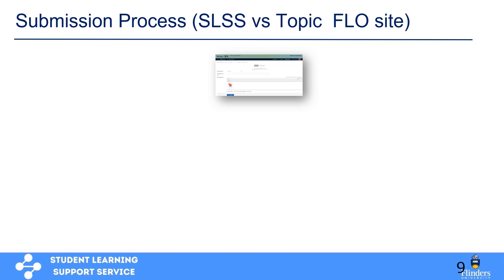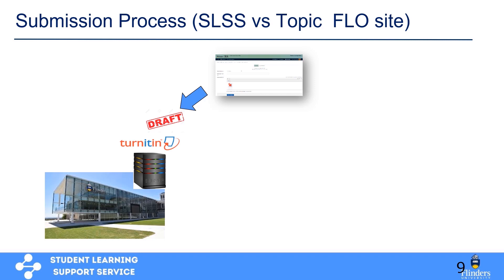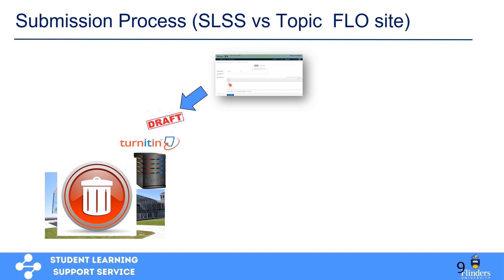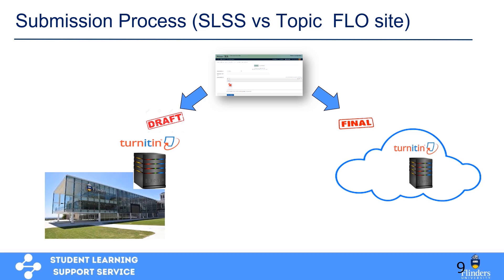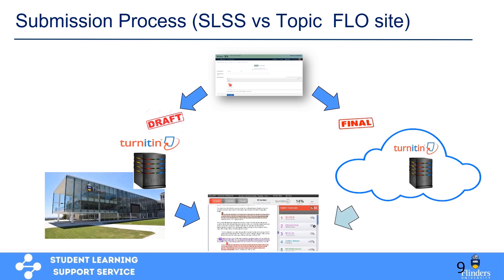What's the difference between the SLSS Turnitin Flow site and the Turnitin submission in your topic Flow site? If you submit your draft assignment or essay through the Turnitin Flow site on SLSS, after 24 hours it will be deleted, which means that if you submit it 24 hours later it will not be matched against itself. However, if you submit your final version through your topic Flow site, it goes through Turnitin and is basically kept there forever. Both will provide you a report.